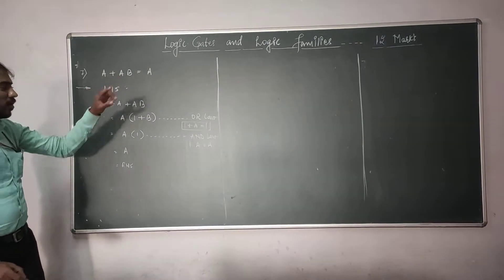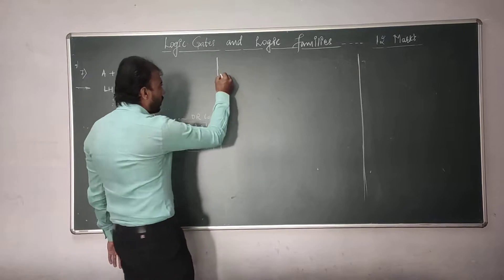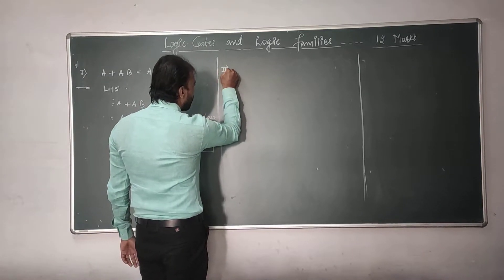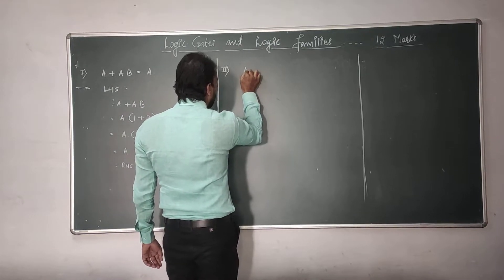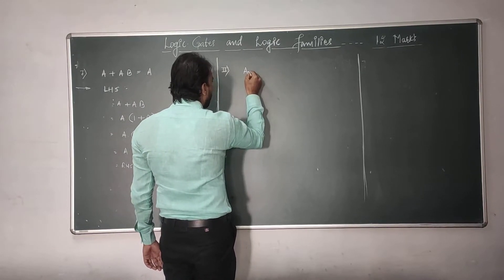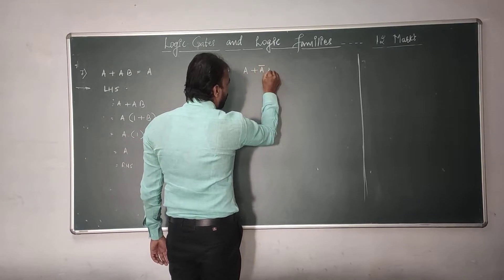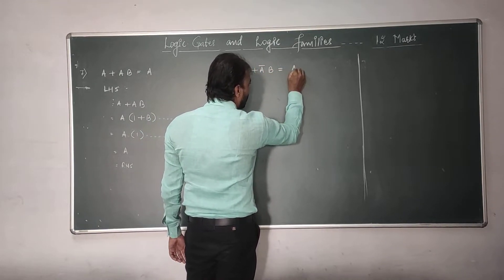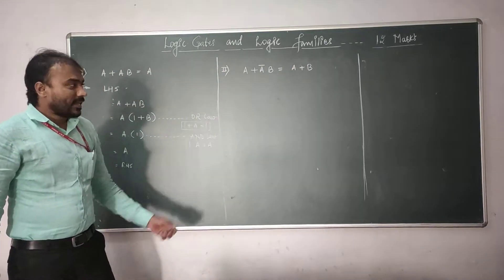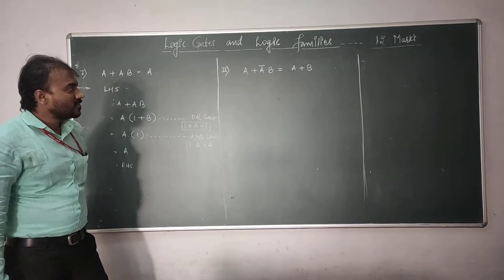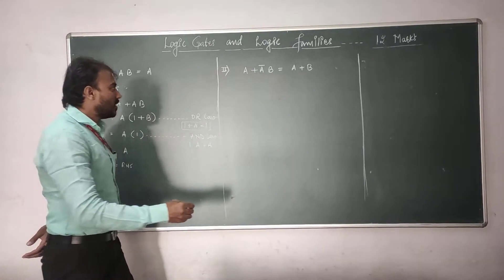So this is the first special law: A plus AB is equal to A. The second special law is: A plus A complement B is equal to A plus B.